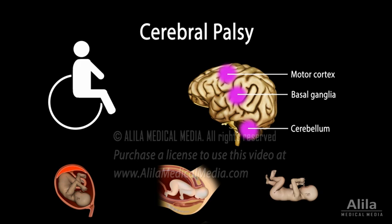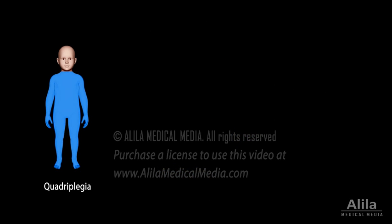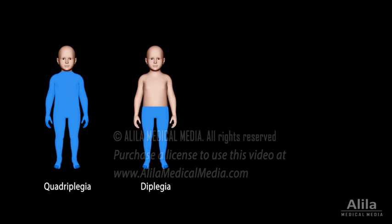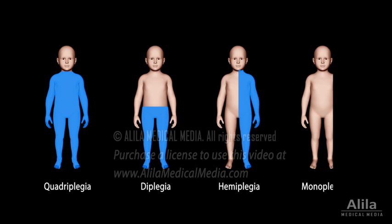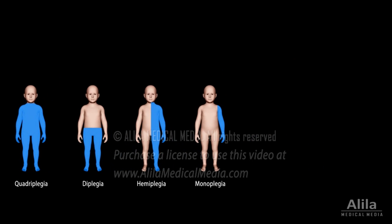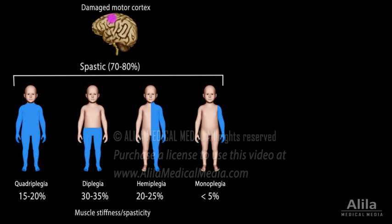Symptoms typically appear during the first months or years of life and vary greatly from one child to another. The condition may affect the whole body, lower half of the body, one side of the body, or just one limb. Most patients experience increased muscle tone, which manifests as muscle stiffness or spasticity, while a small number of children present with floppiness instead.